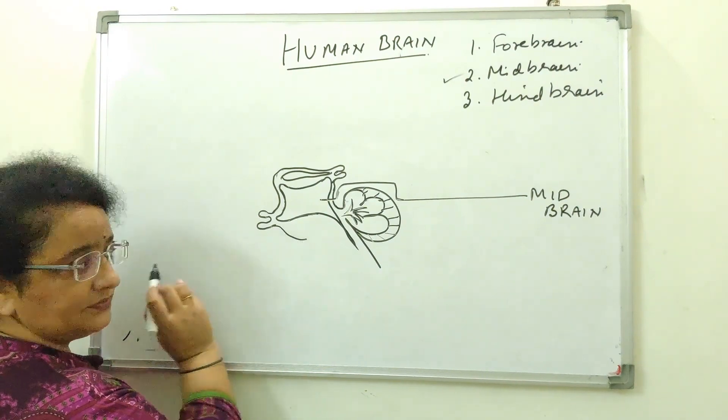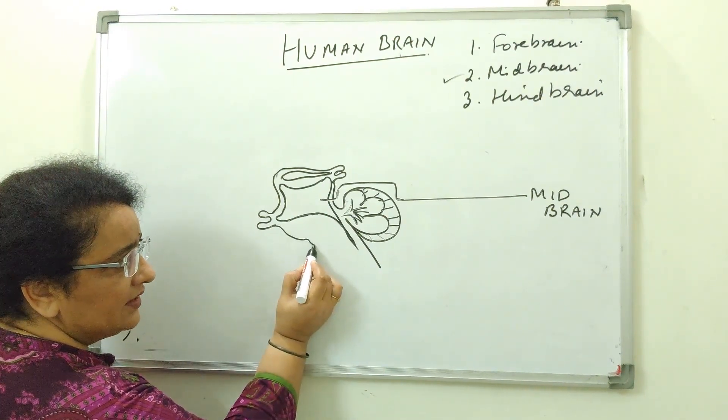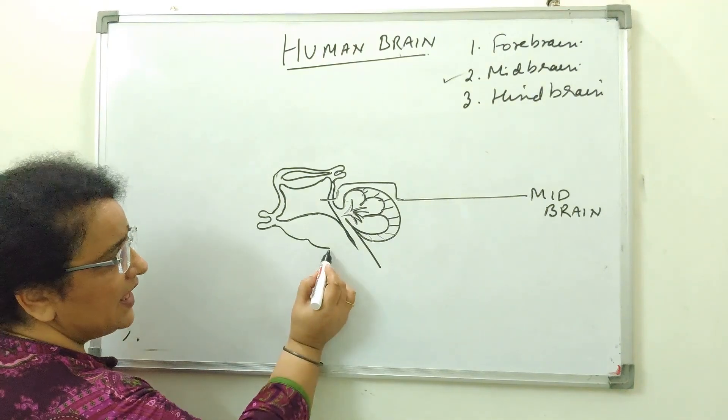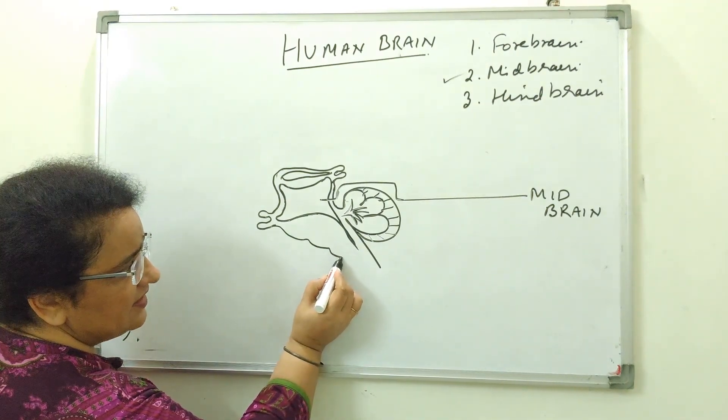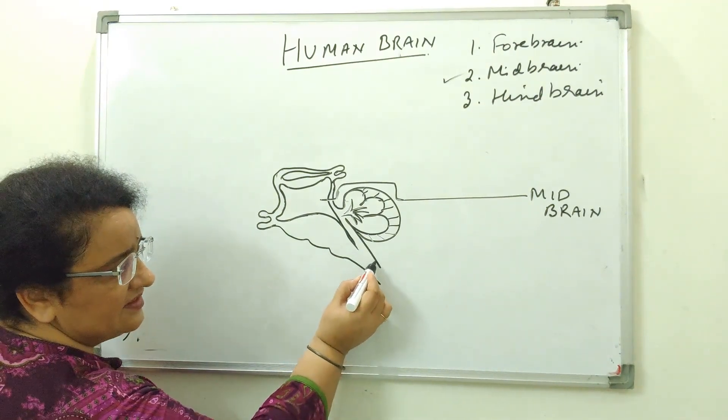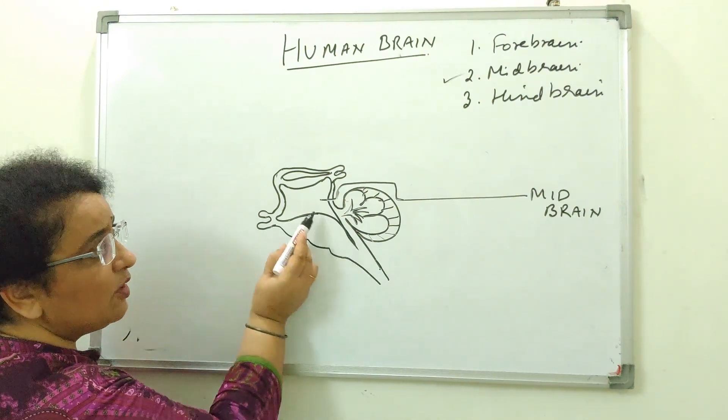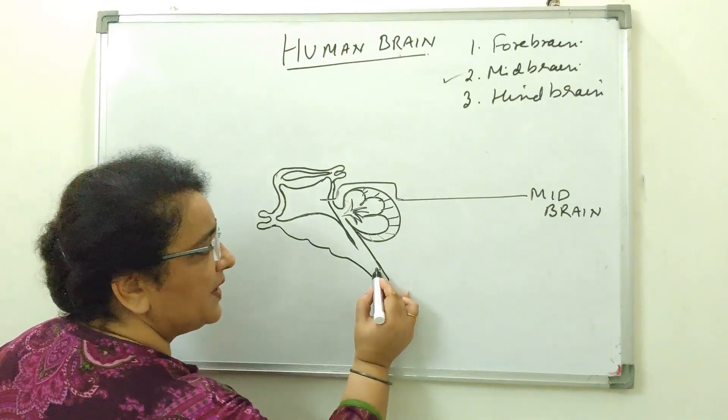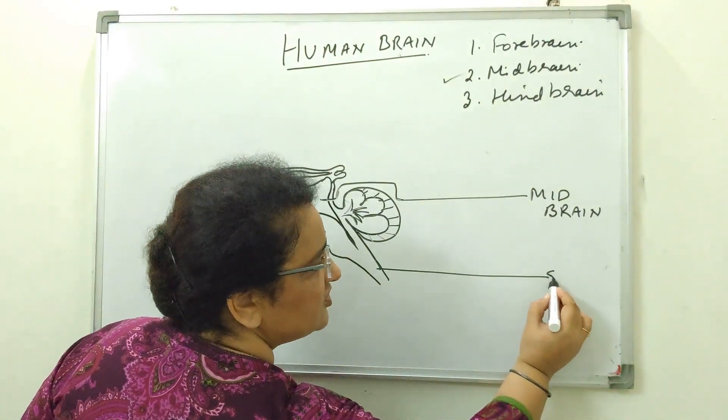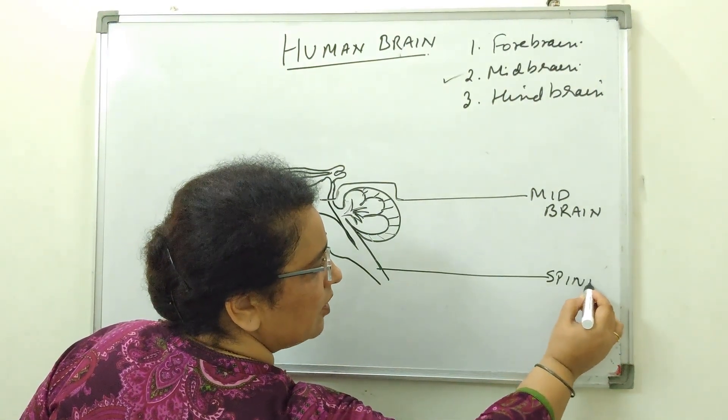One lobe, another lobe and one another and complete it like this. The base of the midbrain are this part in the middle of which it is the tail of the midbrain and this part is nothing but your spinal cord.